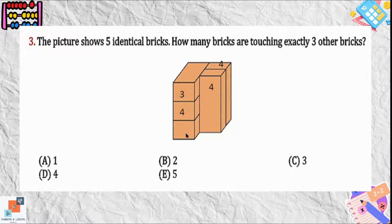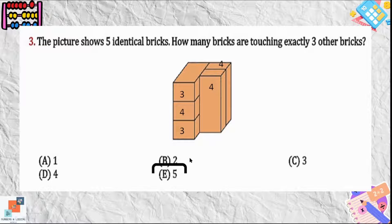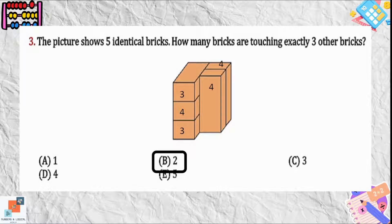The last brick at the bottom is touching three bricks exactly, because one brick is above it and two are beside it. So we can say that there are two bricks which are touching exactly three other bricks.